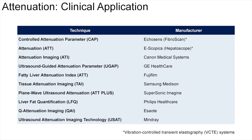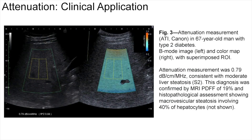Here is a list of the main commercially available techniques for liver fat quantification organized by technique and corresponding manufacturers. In this example, attenuation measurement is shown in a 67-year-old man with type 2 diabetes. On the left we have a B-mode image, and on the right the corresponding color map with a superimposed region of interest. Attenuation measurement was 0.79 dB per centimeter per megahertz, consistent with moderate liver steatosis, or S2. This diagnosis was confirmed by MRI-PDFF indicating 19%, and also histopathological assessment showing macrovesicular steatosis involving 40% of hepatocytes.